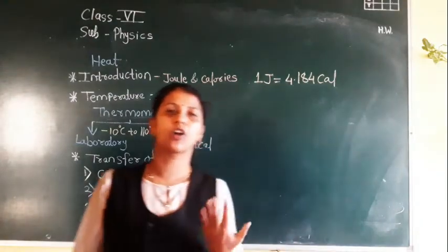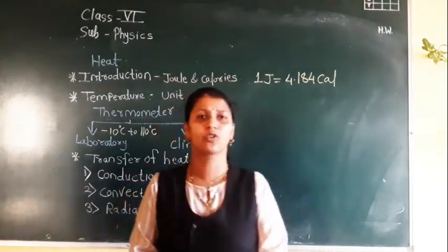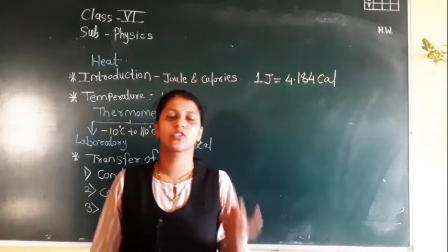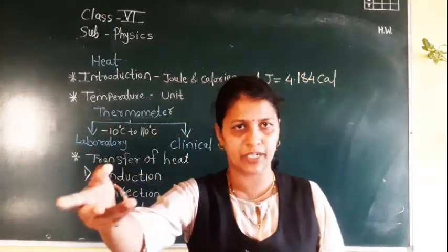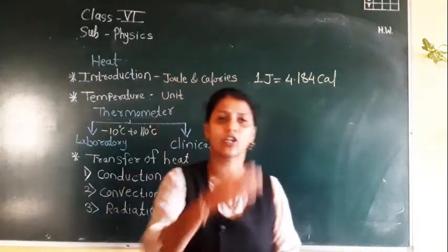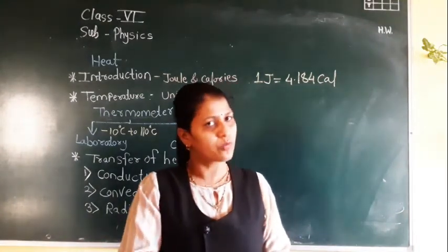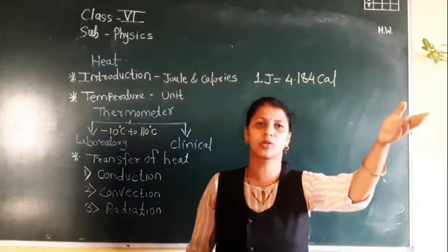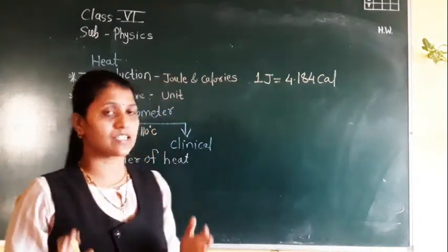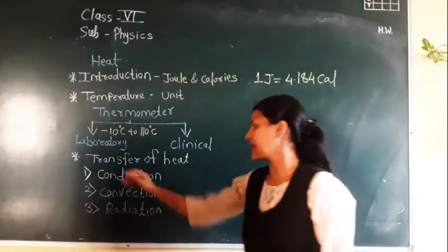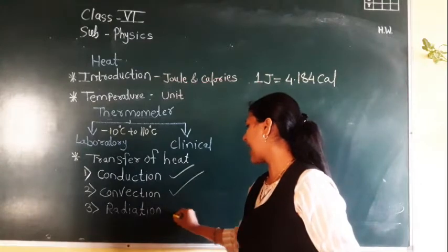We have learned about the transfer of heat. For this I have given an example: if a teacher wants to distribute notebooks, it can be done in three ways. First, the teacher goes directly to the student. Second, the teacher calls the child to come and collects the notebook. Third, the teacher directly throws the notebook to the child. These three ways explain the concept of transfer of heat, which takes place in three types: conduction, convection, and radiation.